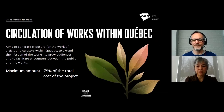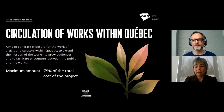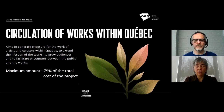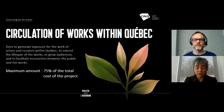The Circulation of Works within Quebec component helps support touring activity — such as the presentation of work on tour or a series of public readings. To be eligible, your application must be accompanied by at least one written confirmation from a venue indicating the dates of the project and terms of presentation. Eligible expenses include travel and per diem, shipping equipment, equipment rentals, promotion and publicity not paid by the host organization, and up to 10% administration fees. The maximum grant amount represents 75% of the total cost of the project.